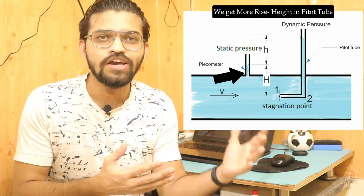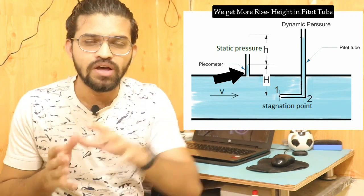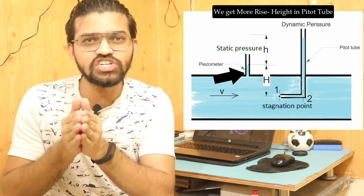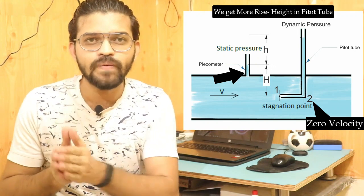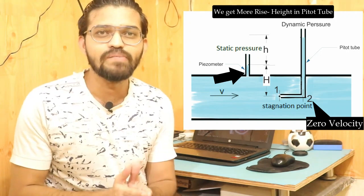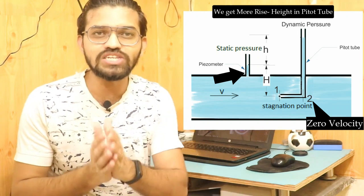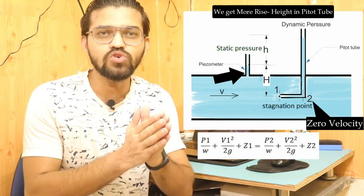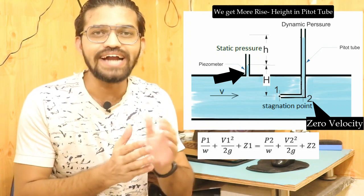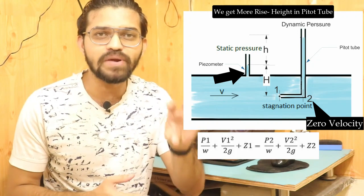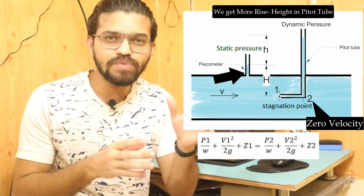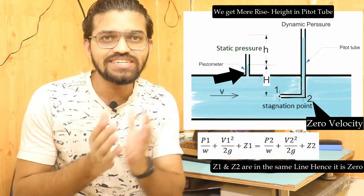At section 1, the fluid has higher velocity; at section 2 (the bend), the velocity is zero — the velocity head is fully converted into dynamic pressure head. Applying Bernoulli's theorem between these two sections: p1/w + v1²/2g + z1 = p2/w + v2²/2g + z2. Since both sections are at the same elevation, z1 and z2 equal zero.